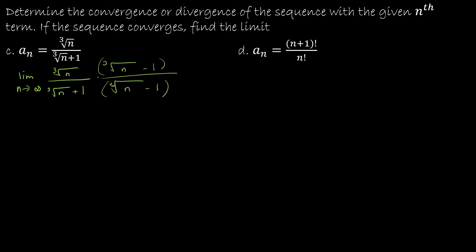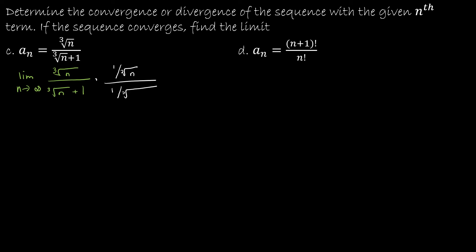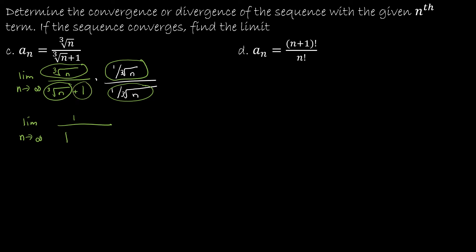Because it's just going to make things more complicated and won't help us find the solution — and keep in mind you won't know that until you actually try it. So for this one, what actually might be helpful is if I multiply the numerator and denominator by 1 over the cubed root of n. Now, why might this be helpful? Because now I'm finding the limit as n approaches infinity: if I take the cubed root of n times 1 over the cubed root of n, I get 1. And if I take 1 times 1 over the cubed root of n, I get 1 over the cubed root of n.